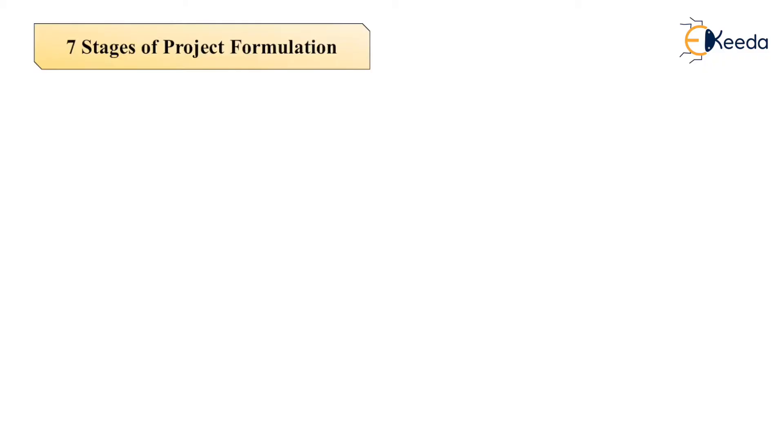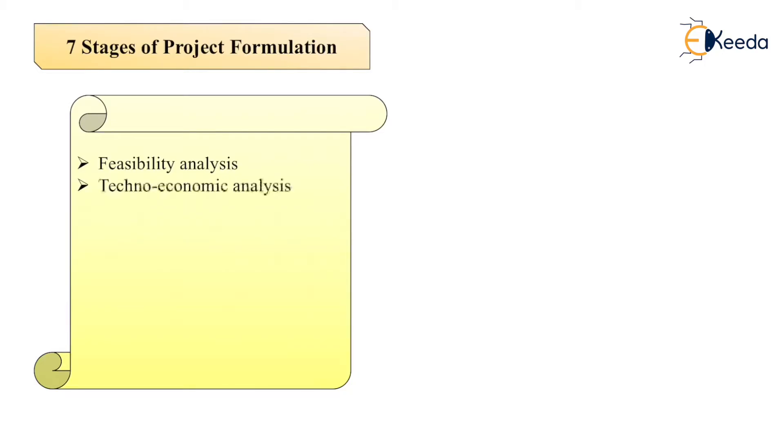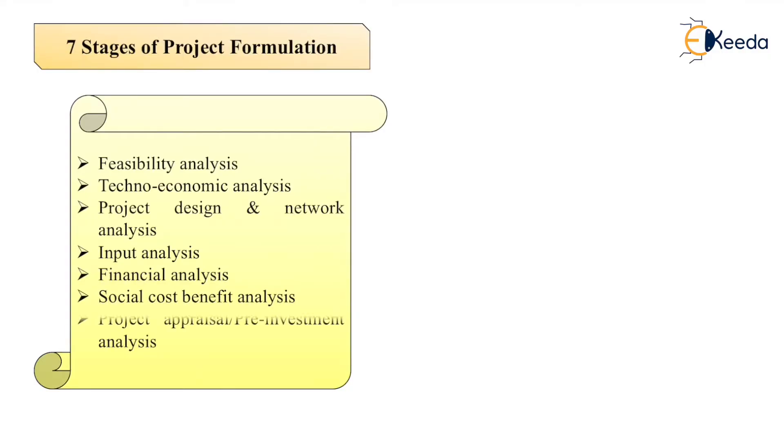Now there are seven stages involved in project formulation. First is feasibility analysis, then techno-economic analysis, then we go for project design and network analysis, then input analysis, financial analysis, social cost-benefit analysis, and lastly project appraisal or pre-investment analysis.